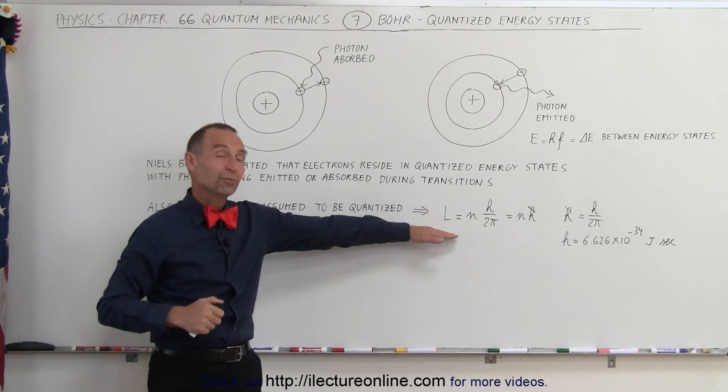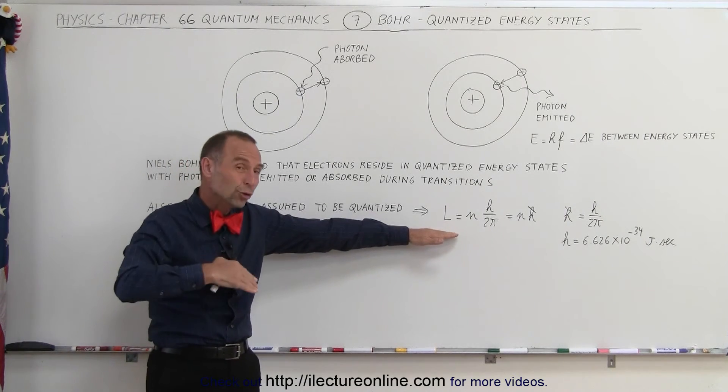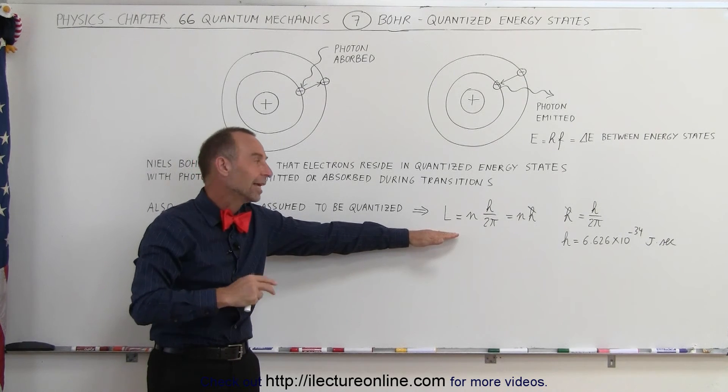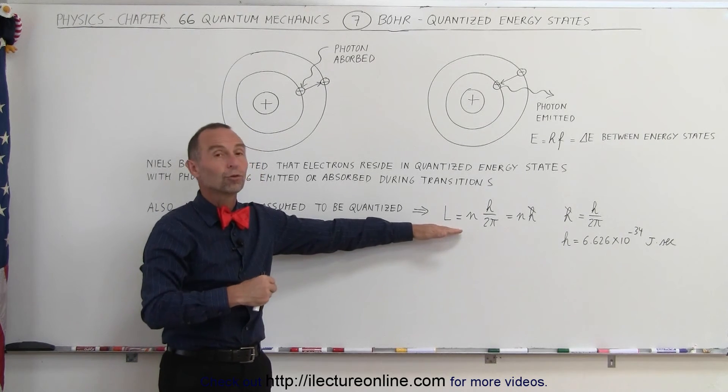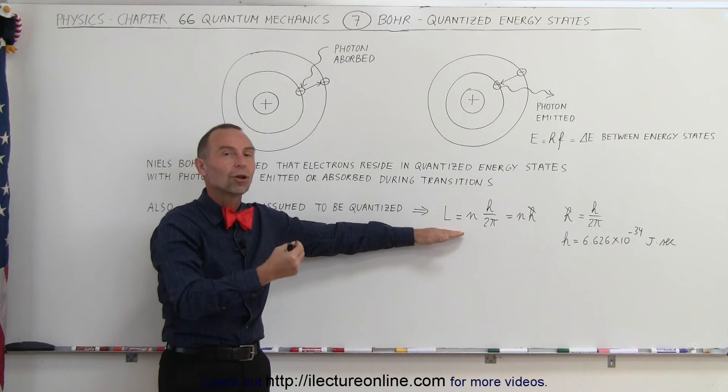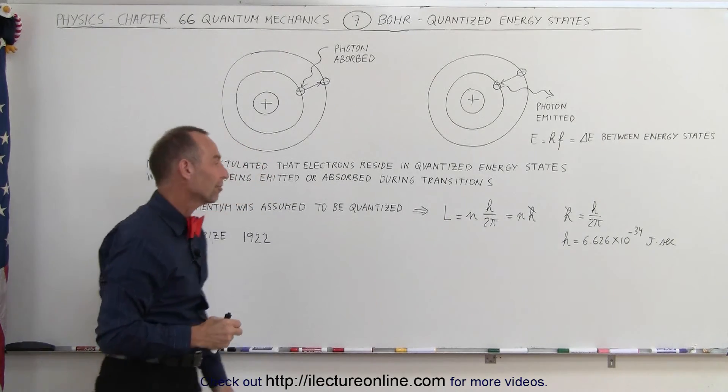This has actually proven to be correct—we now know that angular momentum is indeed quantized in atoms and can be determined by multiplying an integer number times that constant, H divided by 2π.